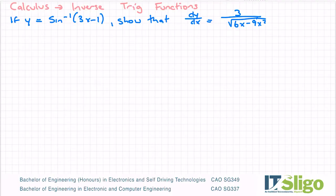Let's have a look at some calculus of inverse trig functions. A student asked me to do this one. If y equals sine inverse of 3x minus 1, show that dy/dx equals 3 over the square root of 6x minus 9x squared.